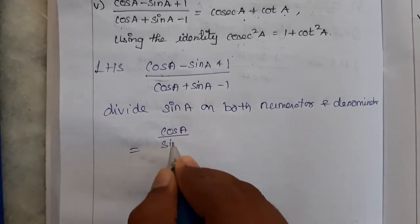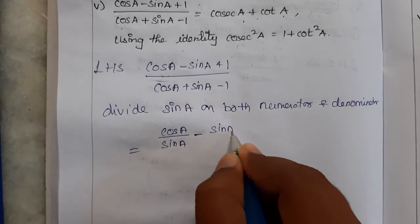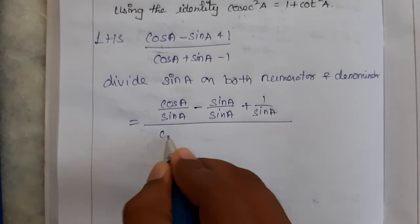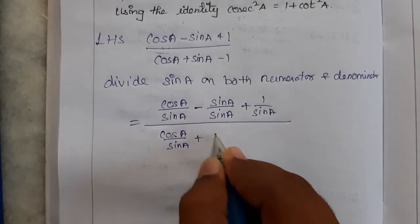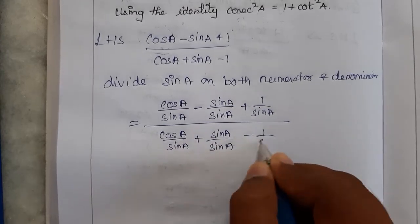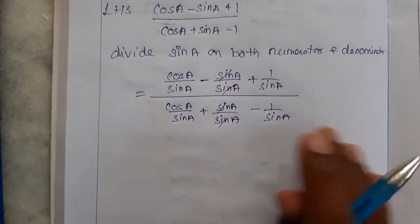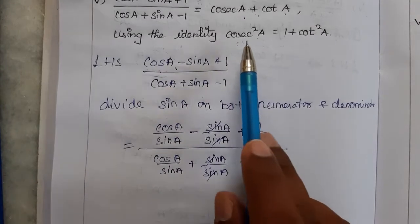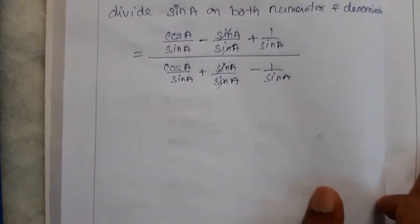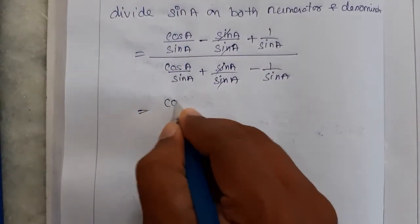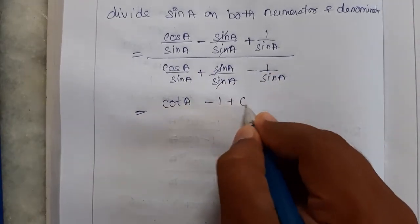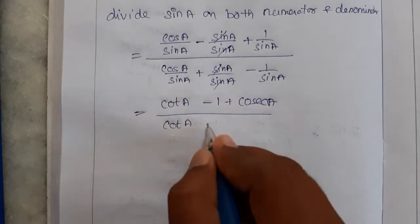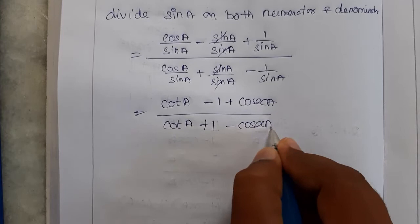Dividing through by sin A: cos A by sin A gives cot A, sin A by sin A gives 1, and 1 by sin A gives cosec A. So the numerator becomes cot A minus 1 plus cosec A, and the denominator becomes cot A plus 1 minus cosec A. Now we need to apply the given identity.